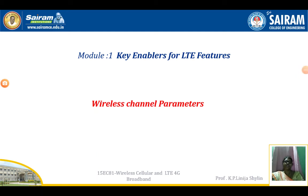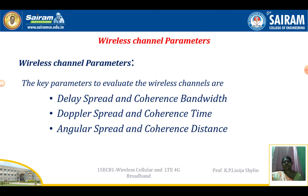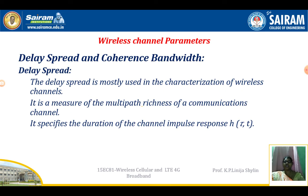In the last session we discussed about the broadband wireless channel fading. Today we will discuss the wireless channel parameters — the key parameters used to evaluate wireless channels: delay spread and coherence bandwidth, Doppler spread and coherence time, and angular spread and coherence distance.